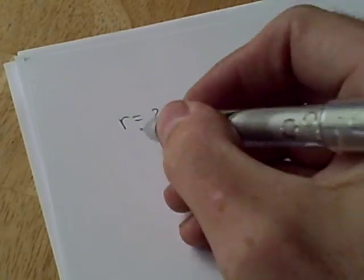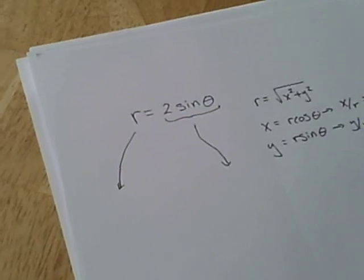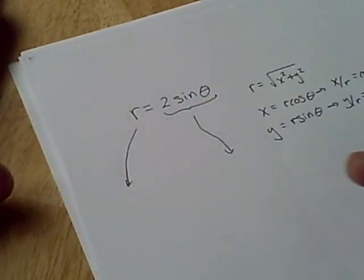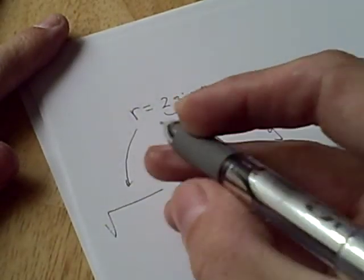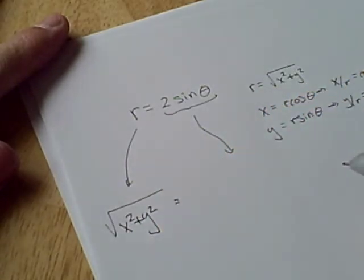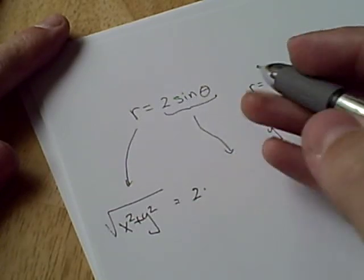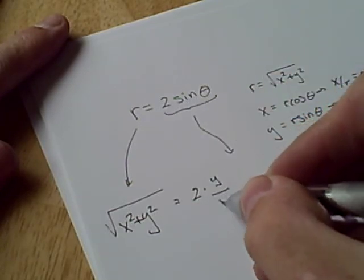And what we do is we take each side of this equation and do some transforming, some substituting, if you will. So r is the square root of x squared plus y squared, and then we have 2, that's of no significance, times sine. Well, sine is y over r.